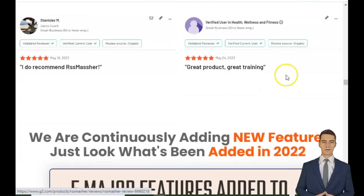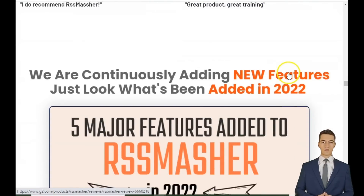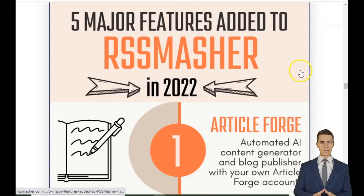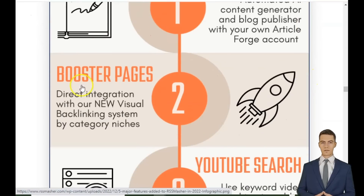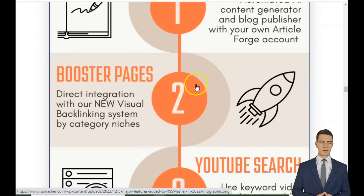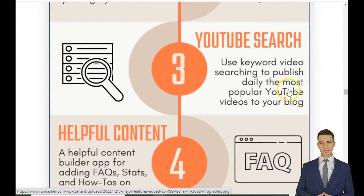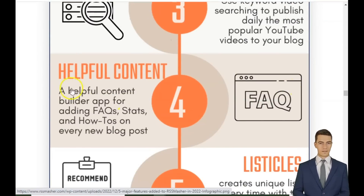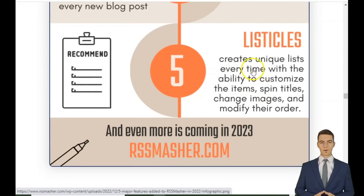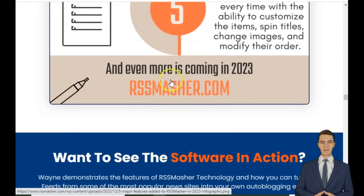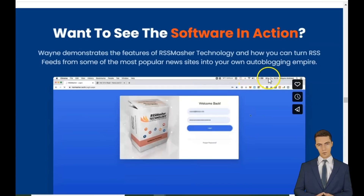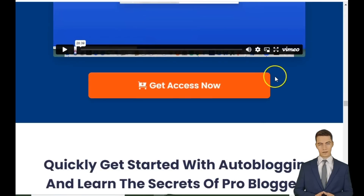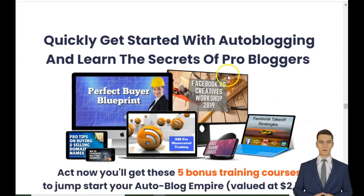Zapier webhooks and Integromat integration — unleash your creativity. RSS Masher connects with 5,000 apps, taking your content distribution to a whole new level. Spin text compatibility: want unique content? RSS Masher is Spintax-enabled and integrates with Spin Rewriter. Each article you post will be fresh and engaging.